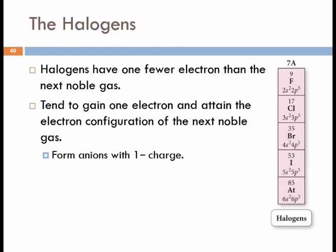Let's look at the halogens. Compare fluorine to neon. Fluorine's got 9 electrons. Neon has 10 electrons.